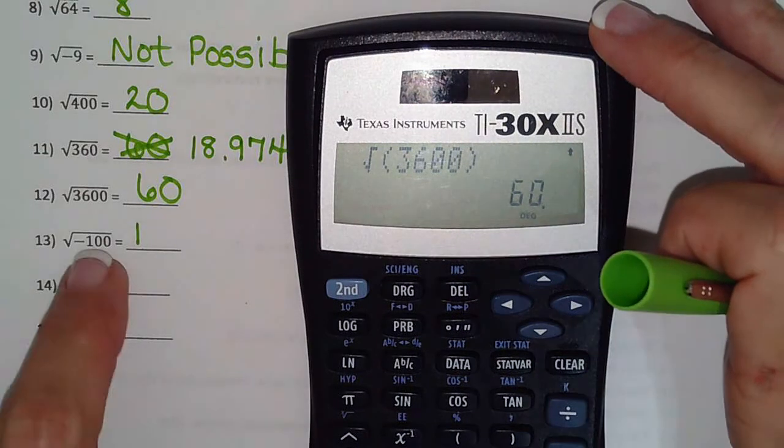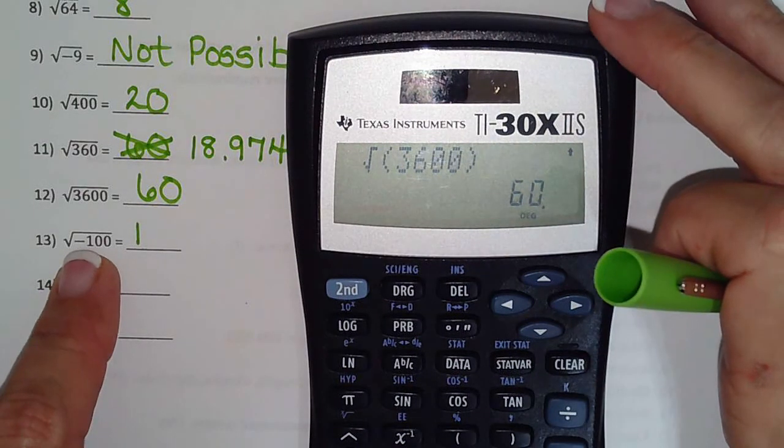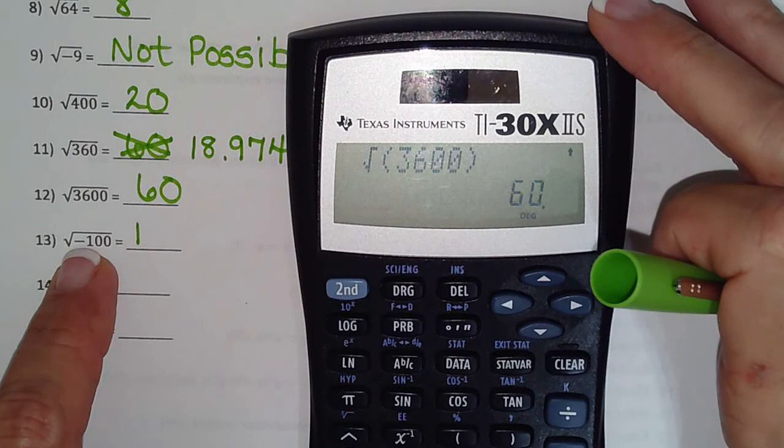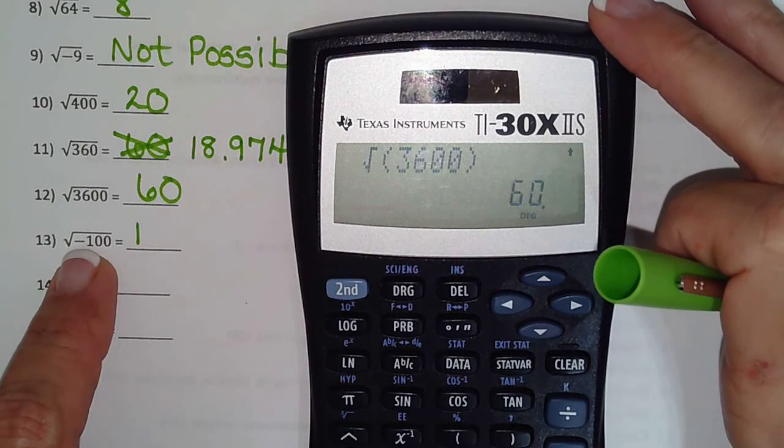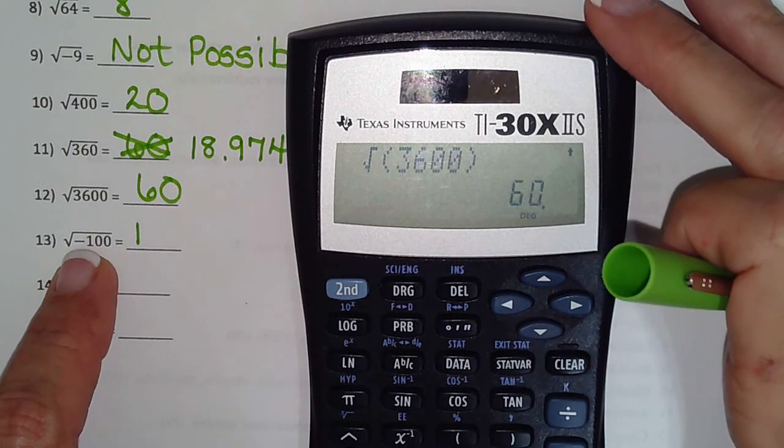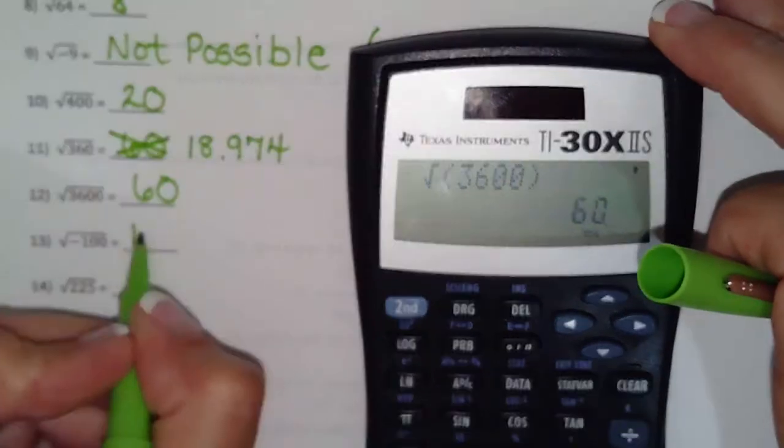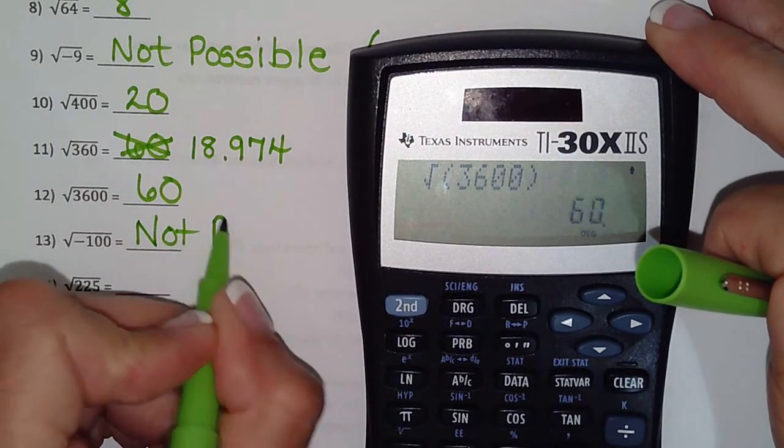Square root of negative 100, negative 10 times negative 10 is positive 100, so this is another one that's not possible.